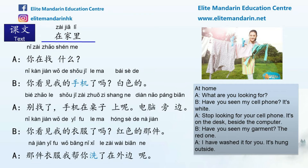For the first sentence: 你在找什么？ — What are you looking for? 你看见我的手机了吗？白色的。 — Have you seen my cell phone? It's white. 别找了 — Stop looking. 手机在桌子上呢 — It's on the desk. 电脑旁边 — Next to the computer. 你看见我的衣服了吗？ — Have you seen my clothes? 红色的那件 — The red one. 那件衣服我帮你洗了，在外边呢。 — I have already washed it for you. It's hung outside.